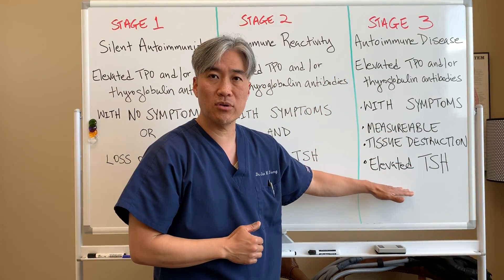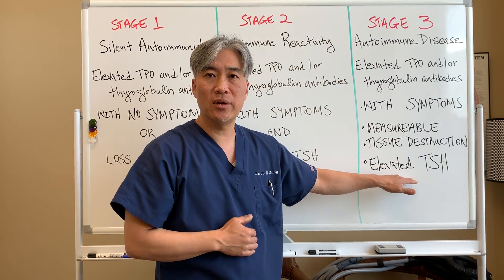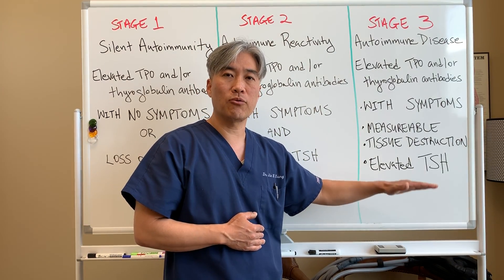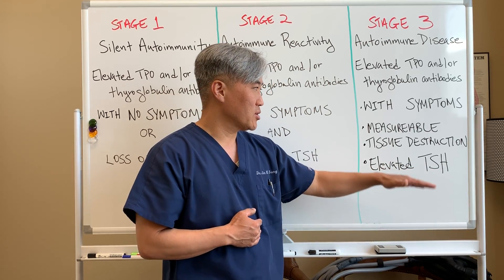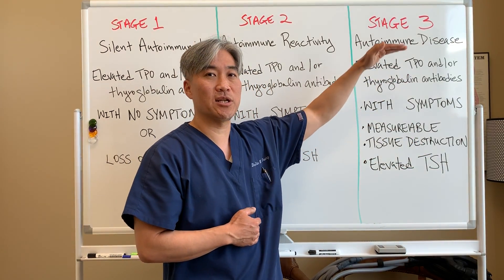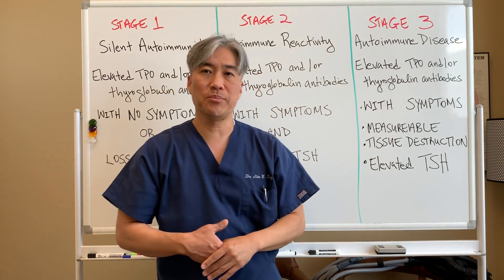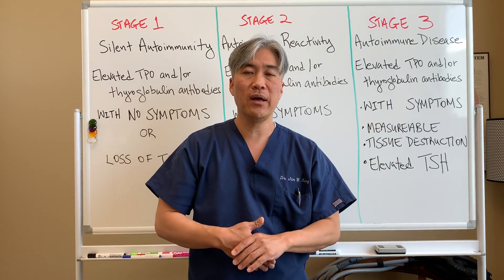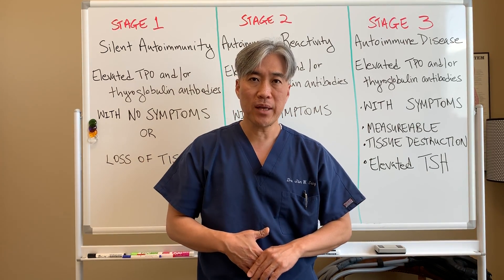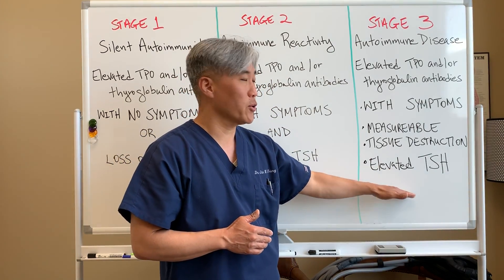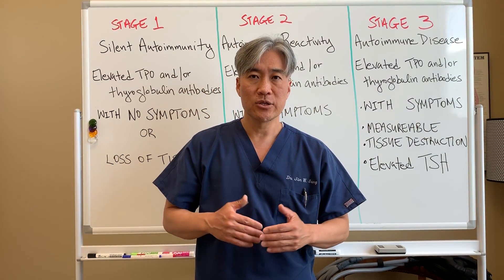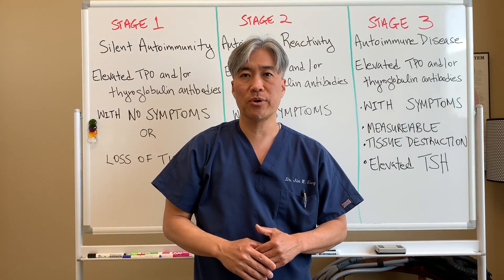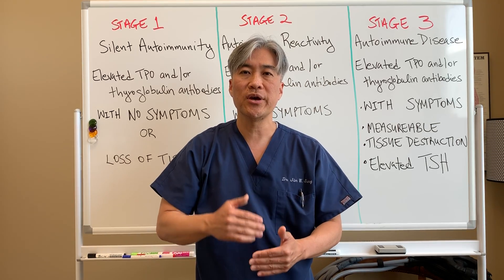Those interventions can be used to help keep the autoimmunity in the silent stage. As we start to progress, it becomes more difficult. If someone has elevated TSH, they may have been diagnosed five or ten years ago and are on thyroid replacement hormone, yet the tissue destruction continues to happen because this is an autoimmune disease. They will possibly never get off thyroid medications. But there are also interventions you can do in this third stage of autoimmunity, so it's very important to decipher where we are in the three stages and make interventions early on, rather than waiting for the TSH to be elevated.